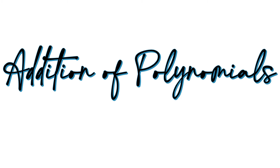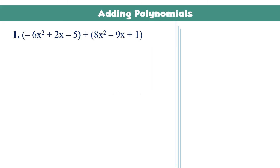Addition of polynomials. In adding polynomials, you just have to combine their like terms, then write your answer in standard form. When we say standard form, you have to start with the term with the highest degree, then the second highest degree, the third highest degree, and so on. In short, the exponent must be in decreasing order until you reach the constant term.